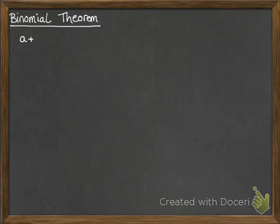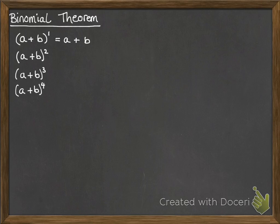Alright, binomial theorem. We're going to have a look at doing these expansions. We're starting with a plus b and we're increasing the power that we're multiplying up by. I'm starting with the 1 so it helps us to see the whole pattern, but of course that just expands to a plus b.